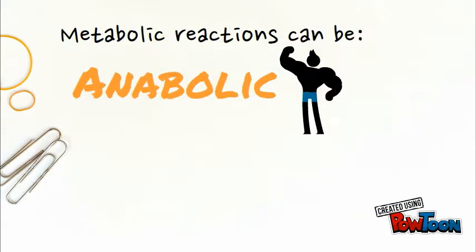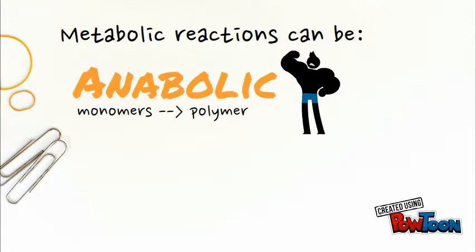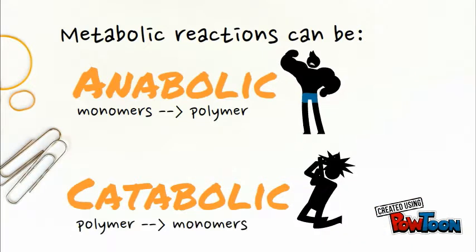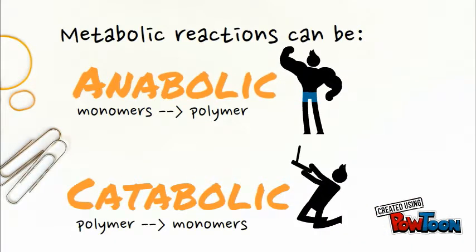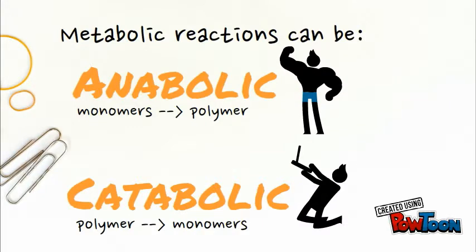Metabolic reactions can be anabolic, where smaller molecules or monomers join to become larger molecules or polymers — think anabolic steroids. Metabolic reactions can also be catabolic, where polymers are broken down into monomers and energy is released — think catastrophe.